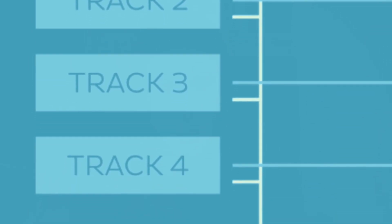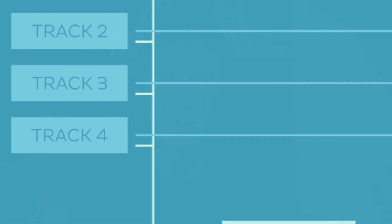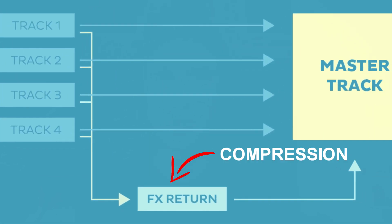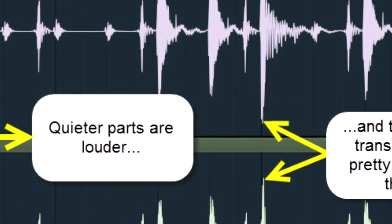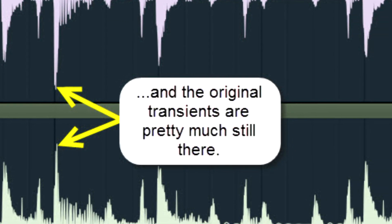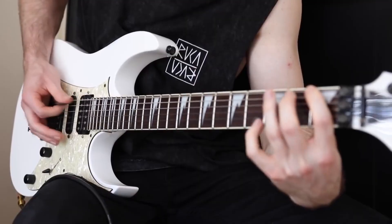Compression can also be used in parallel to make things sound louder and more aggressive. Parallel means sending something on a return — having your compression on a return and sending signal to it. You can beef up the sound of your drums without actually losing any peaks. That's the true beauty of parallel compression, and you can use it on other things as well.